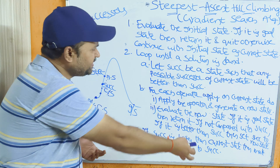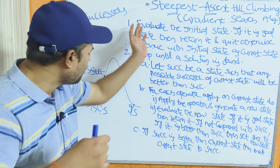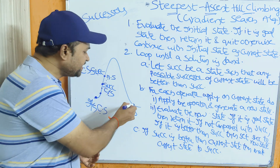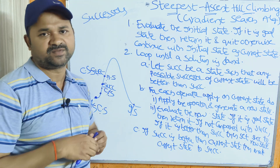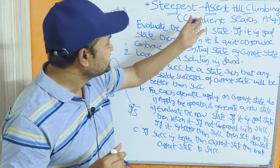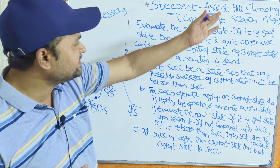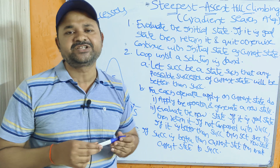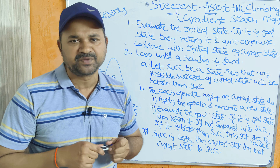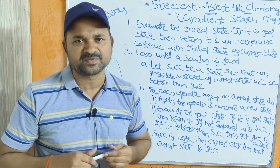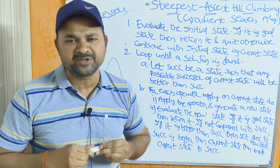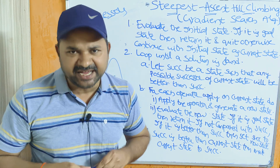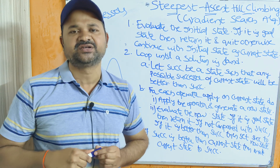Likewise, we apply rules one by one, looping until we reach the goal state. This is the steepest ascent hill climbing algorithm, also called the gradient search algorithm. Please like the video, subscribe to the channel, and share it with your friends. Thanks.